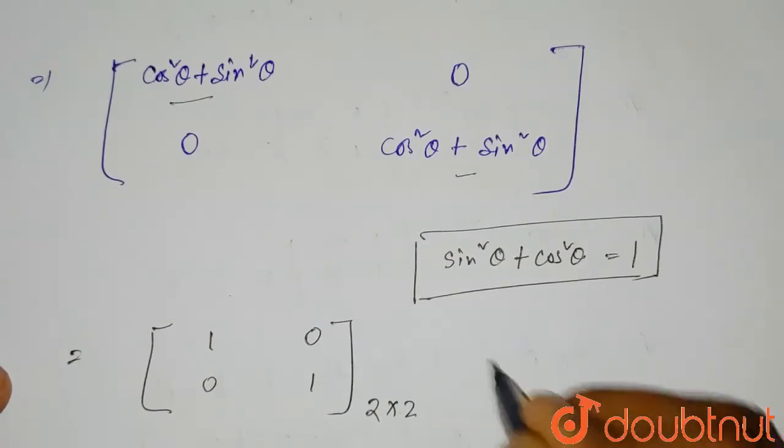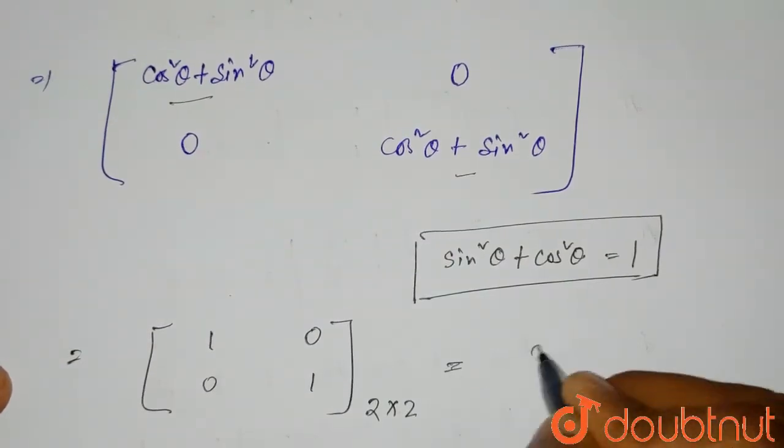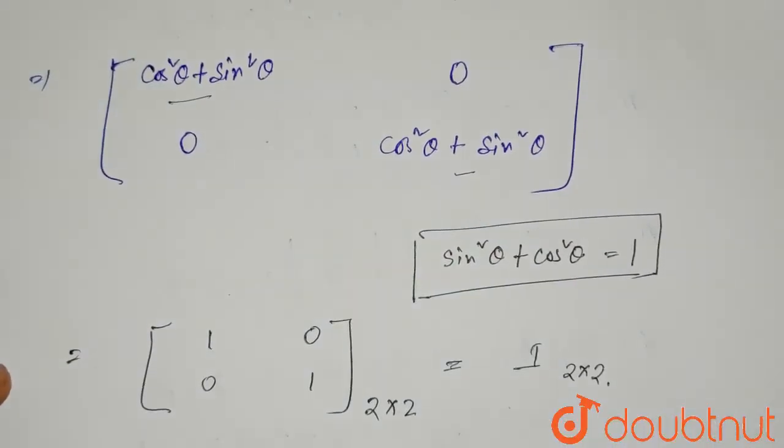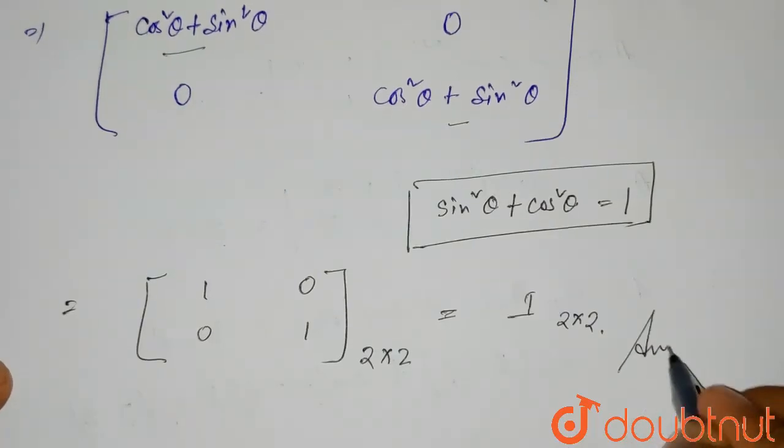Which is a 2 by 2 matrix and which is what? This is the identity matrix of 2 by 2, 2 by 2 order. So this is the required solution of this question. Thank you.